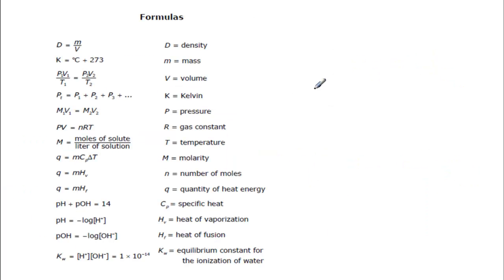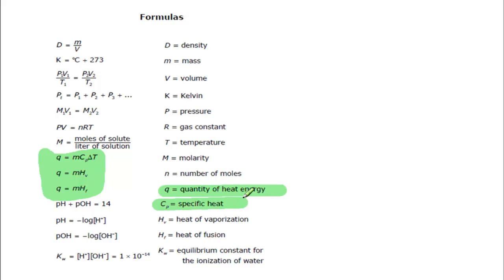On your formula page, the formulas you're going to need are right here. Q is your quantity of heat energy, C_P is your specific heat, H_V is heat of vaporization, and H_F is heat of fusion. These are the same formulas that are on your packet.